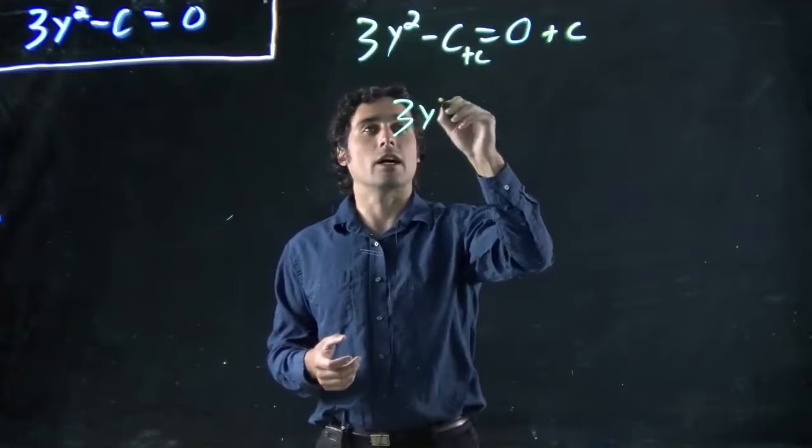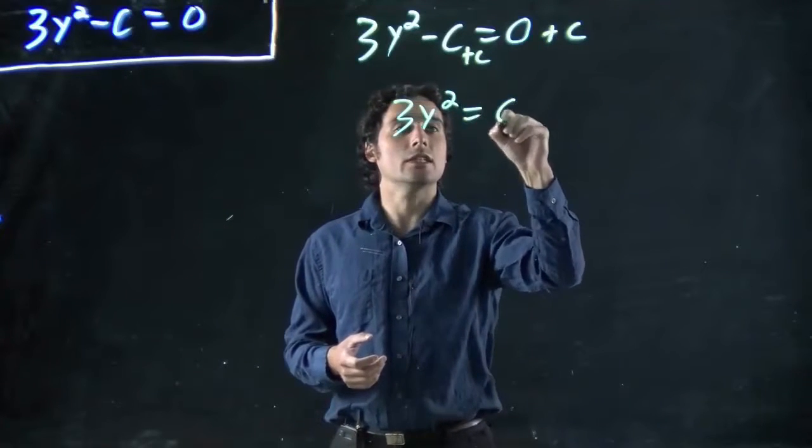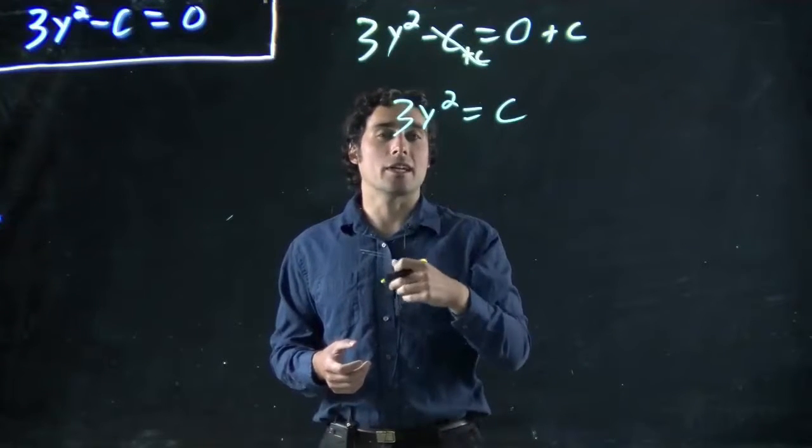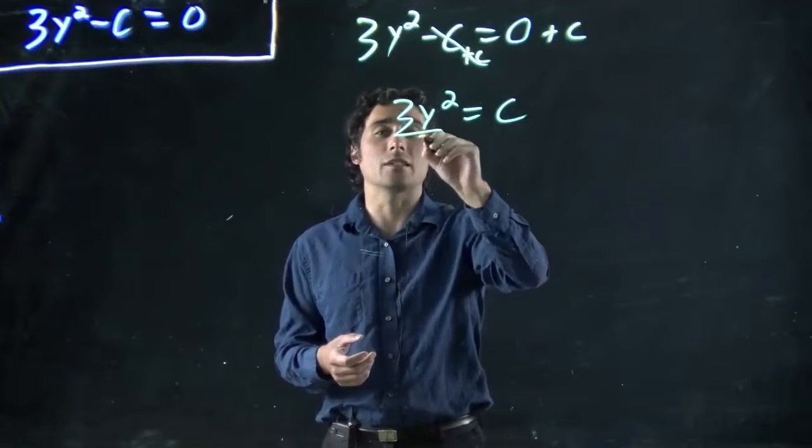So I get 3y squared equals c. Great, because those canceled. Well, now I got to get rid of the multiplication. To do that, I got to divide both sides by 3.